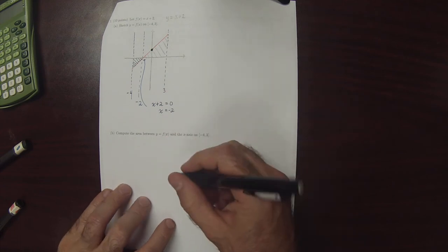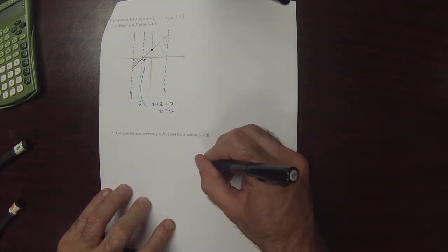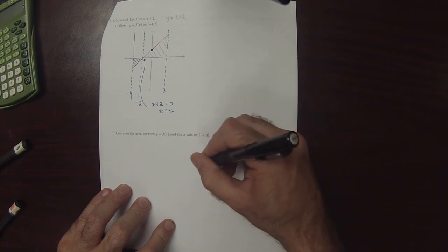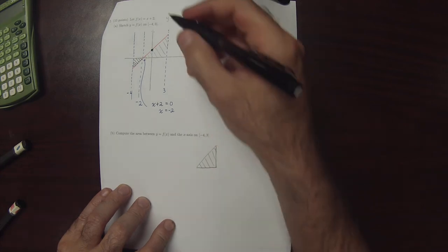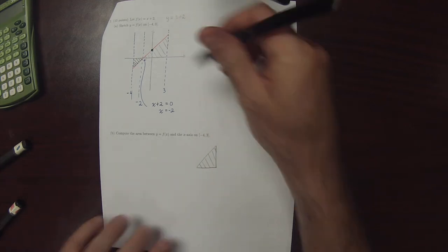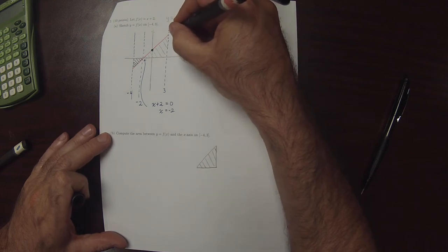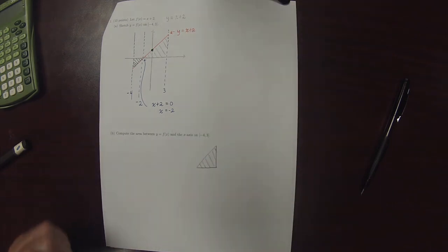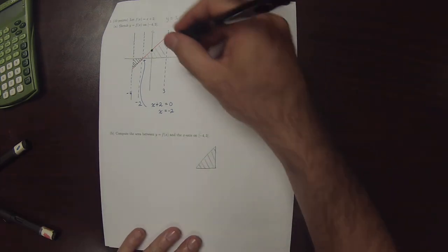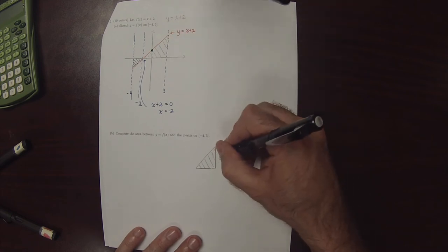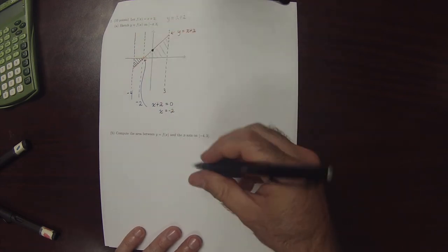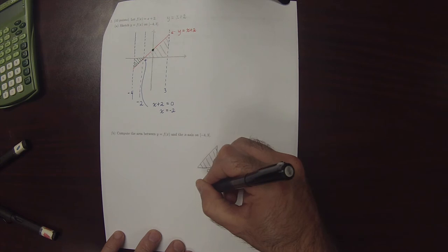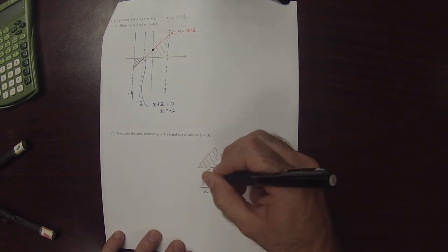So the triangle on the right, if you plug in 3 into y is x plus 2, then you'll determine that this is height 5. So this is height 5. And this base is also 5. So its area is 25 over 2. Base times height over 2.